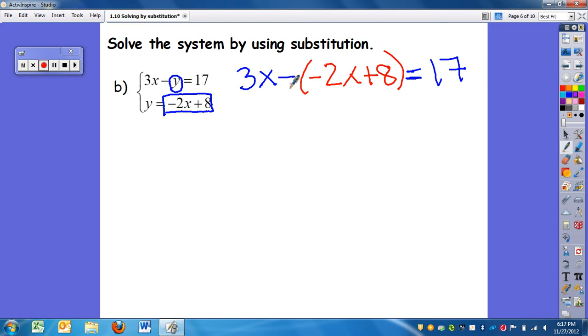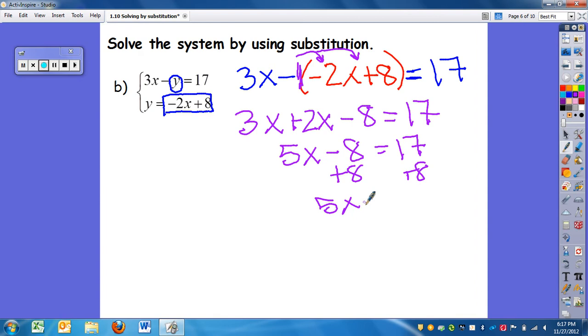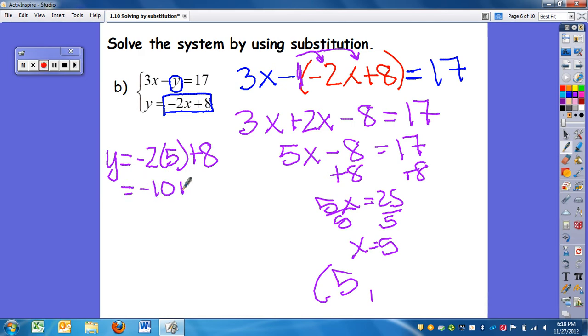So to solve this I have a negative which is like a negative 1. So I'm going to distribute the negative 1. This is why parentheses are important. So I have 3x plus 2x because negative times negative is a positive minus 8 equals 17. 5x minus 8 equals 17 by combining like terms. Add 8. 5x equals 25. Divide by 5. x equals 5. So that is my x coordinate of my solution. I need my y coordinate. So I'm going to plug it into the second one. So I have y equals negative 2 times 5 plus 8. Negative 10 plus 8 equals negative 2. So my point of intersection is (5, -2).